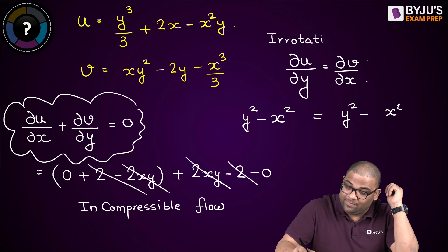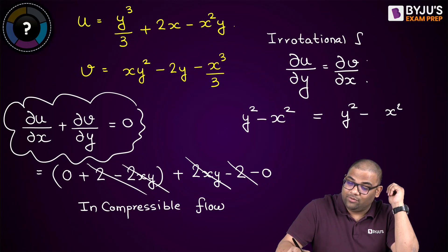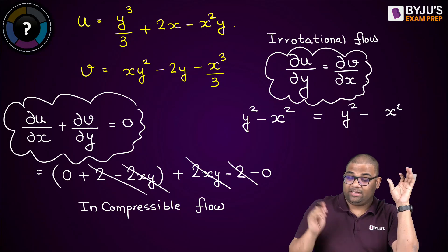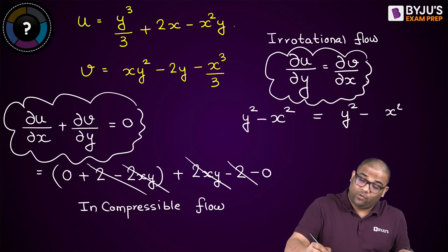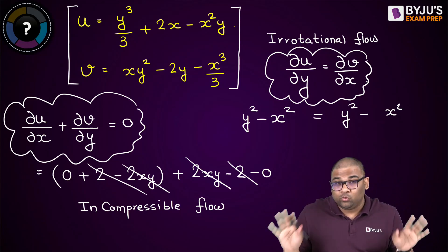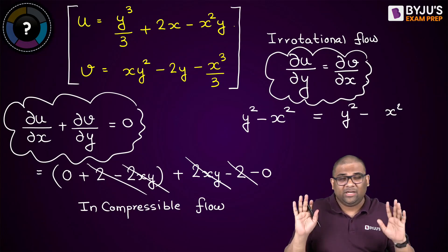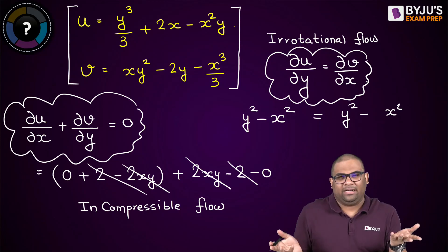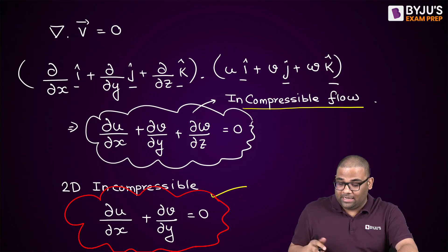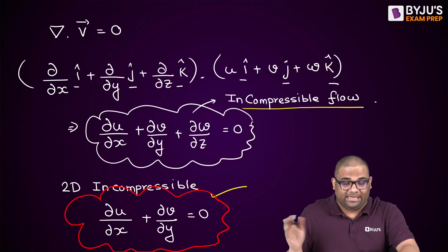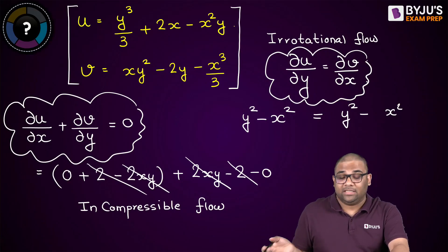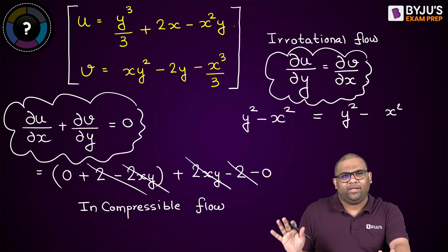By just applying these two conditions, you can solve many GATE and similar exam questions where they ask you to check whether a flow is incompressible or irrotational. Most questions are 2D. For 3D, all three curl components must be zero, and ∂w/∂z must also be included. Thank you very much.